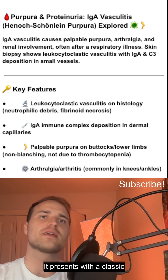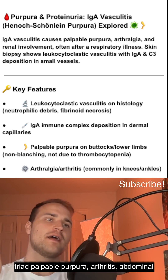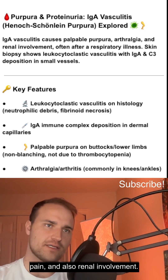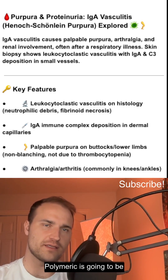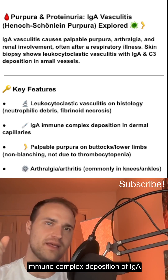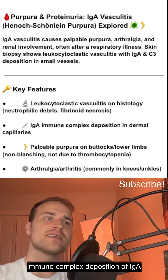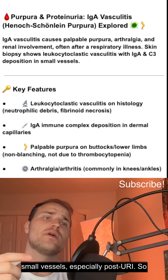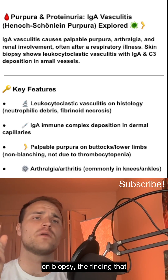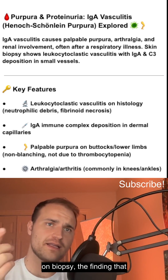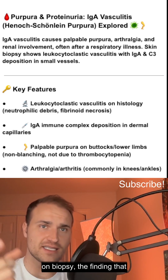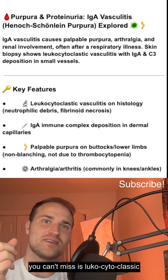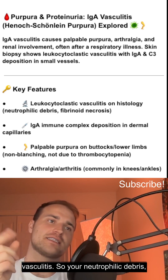It presents with the classic triad: palpable purpura, arthritis, and abdominal pain, and also renal involvement. The hallmark is immune complex deposition of IgA in the small vessels, especially post-URI. So on biopsy, the finding you can't miss is leukocytoclastic vasculitis.